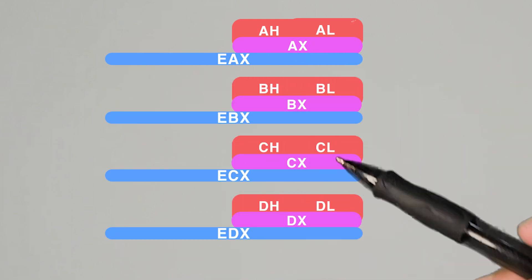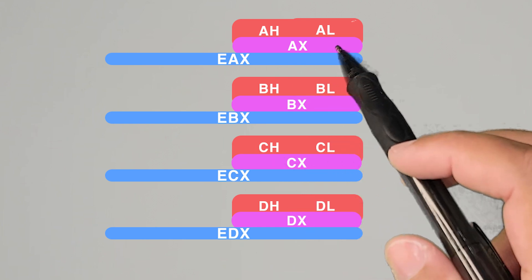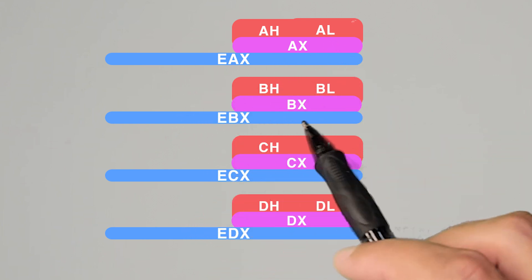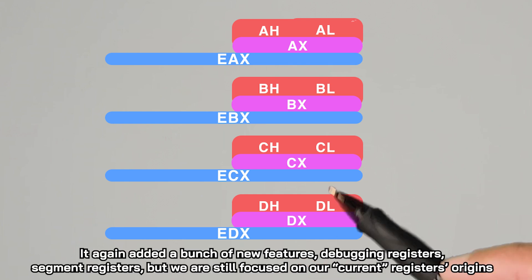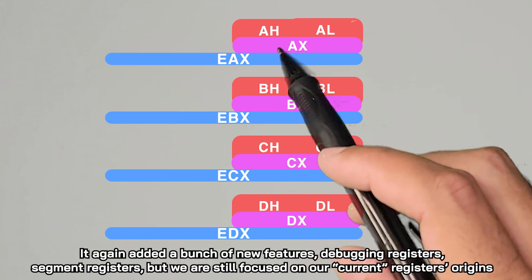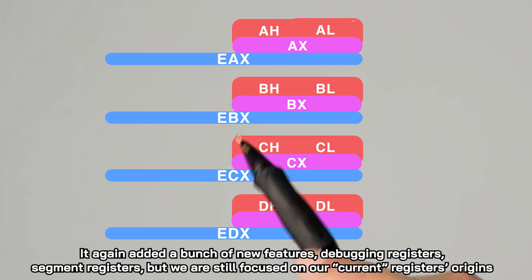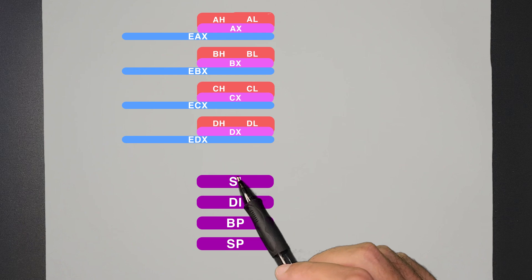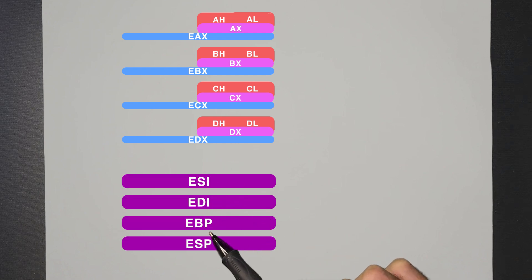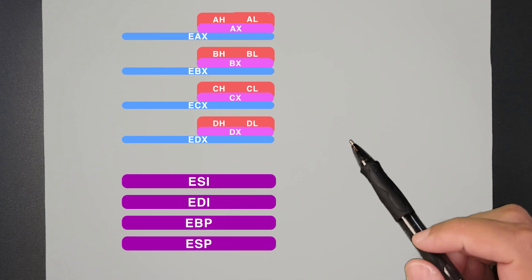So it just gave you a very dynamic way of accessing the same 32 bits of data to match your needs. And the same thing happened with B, C, D. So we had now at this point EAX, EBX, ECX, EDX. So it's still four main general purpose registers, but we can access smaller subsets of them to keep backwards compatibility and for finer grain control. Source index, destination index, base pointer, stack pointer followed suit. Now this is ESI, EDI, EBP, and ESP.